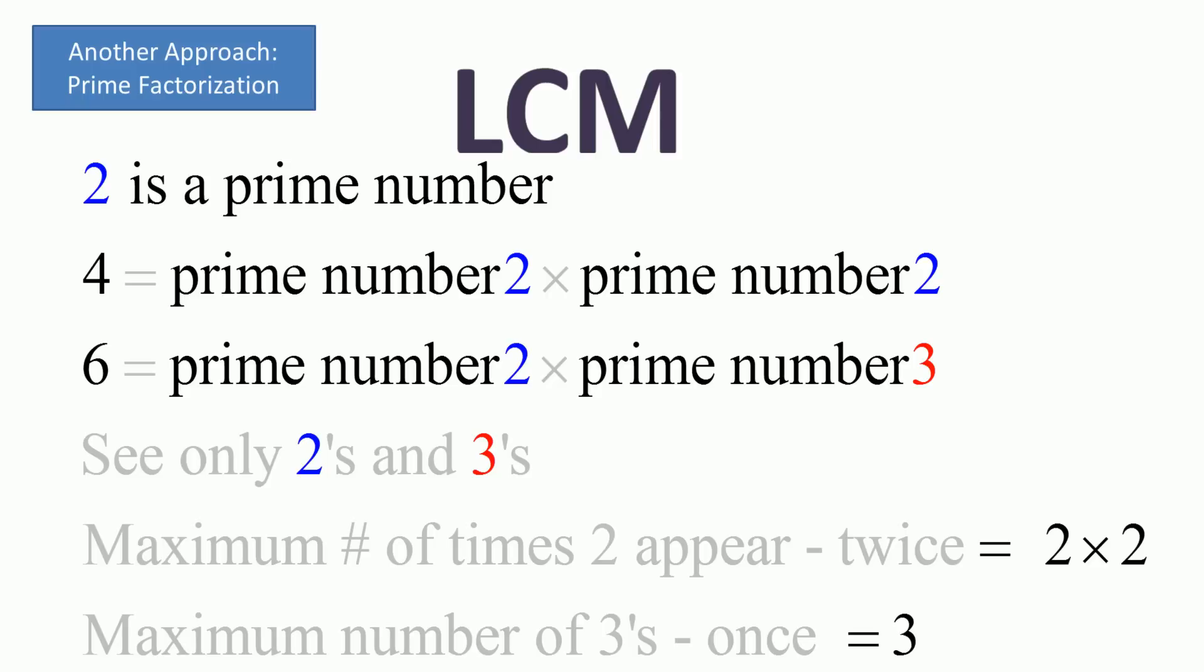What is the maximum number of times 2 appears? It's twice, so you put 2 times 2 together and you get 4. What is the maximum number of times 3s appear? Just once. So what is 4 times 3? 12.